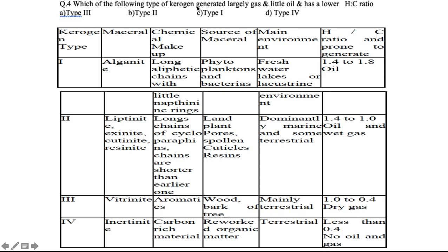Question four: which type of Kerogen generates largely gas and little oil and has a lower hydrogen-to-carbon ratio? Looking at all four types of Kerogen — their maceral components, chemical makeup, source materials, depositional environment, and hydrogen-to-carbon ratio — as we move towards Type 4, the H/C ratio decreases. It ranges from 1.4 to 1.8 for Type 1, which has oil deposits. As we move down, the H/C ratio decreases, reaching 0.4.